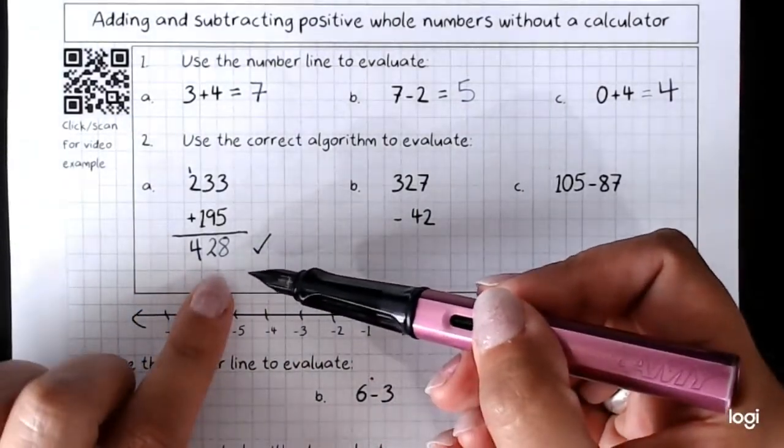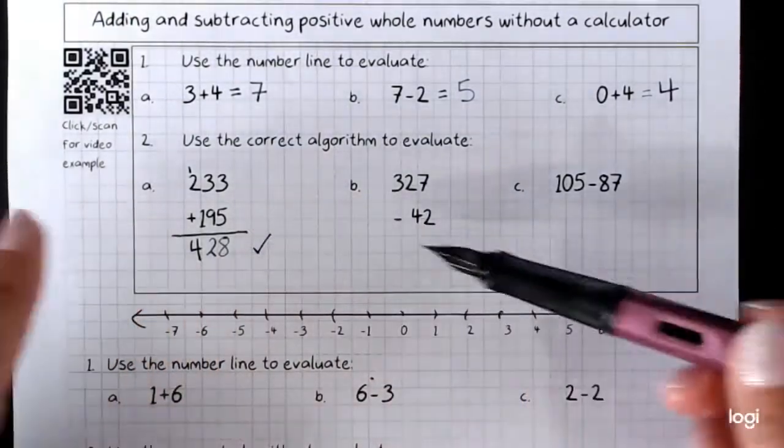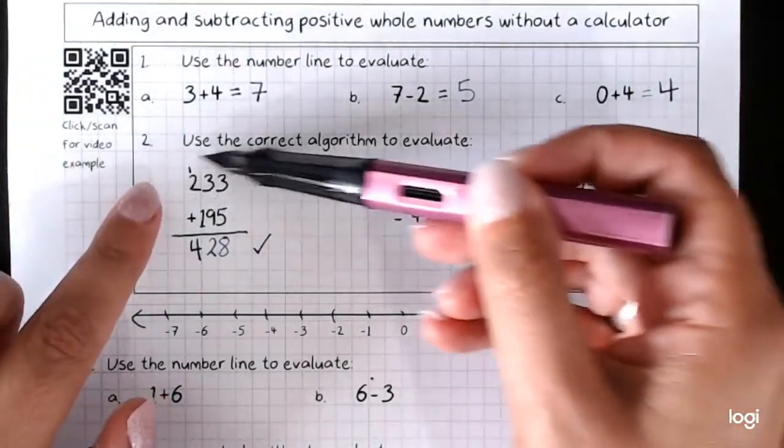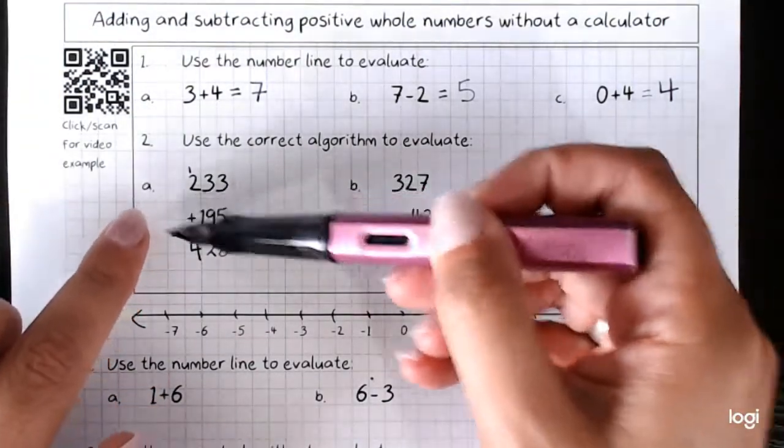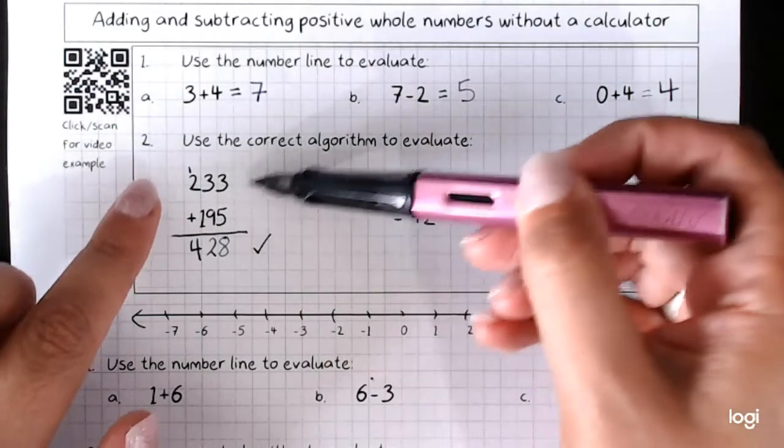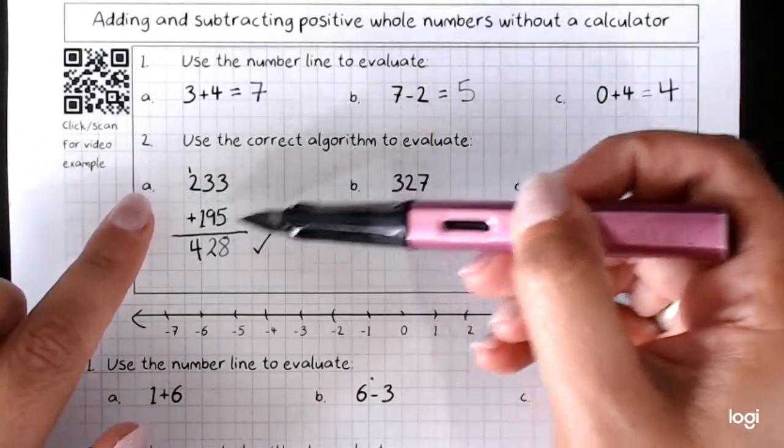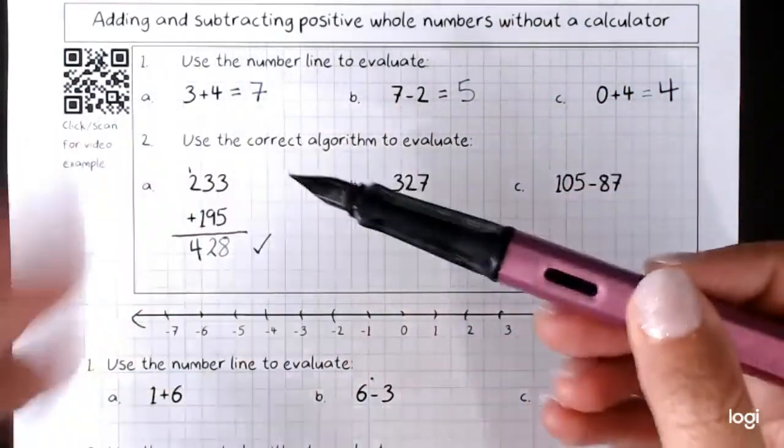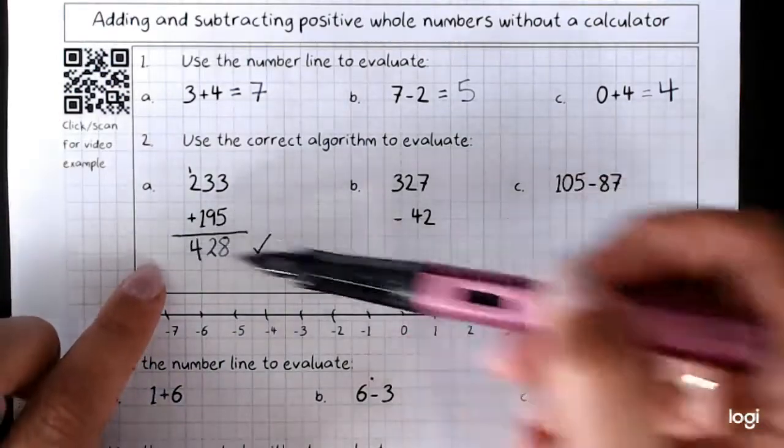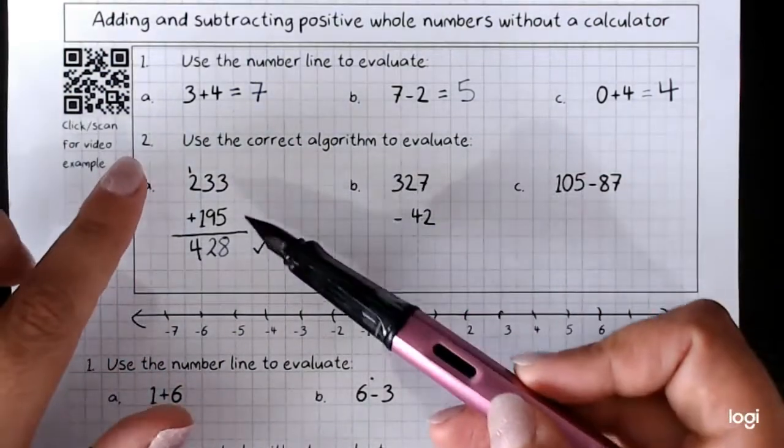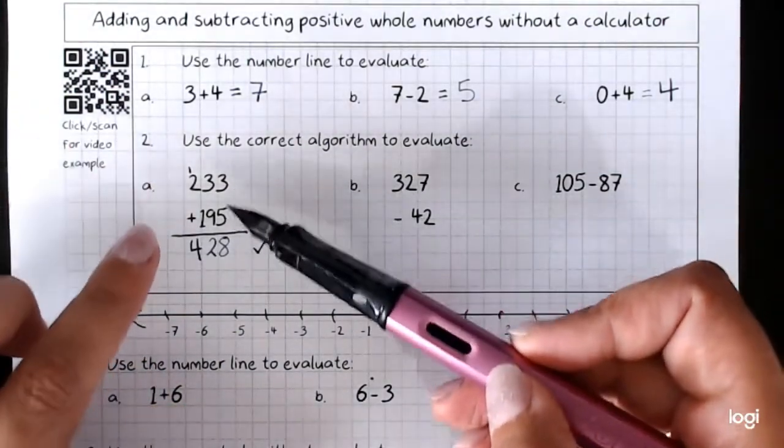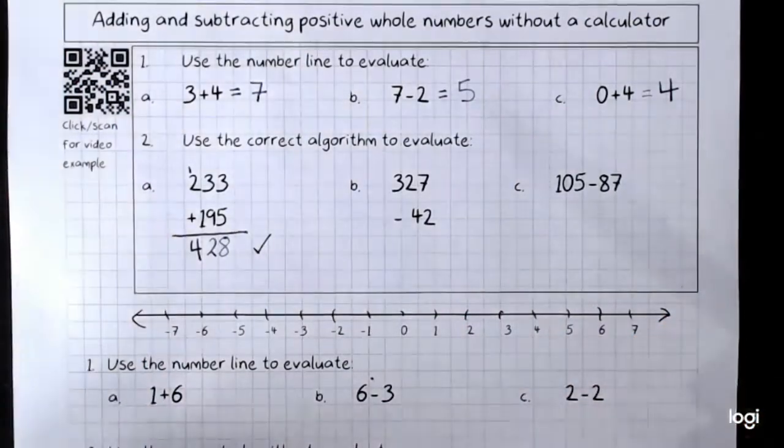We could check our answers by quickly estimating. 233 plus 195. Look, that's about 230 plus about 200. That's going to be about 430. That's about right. So just going to pretty close with the numbers and checking is a good idea.